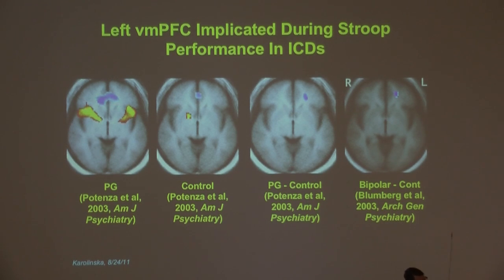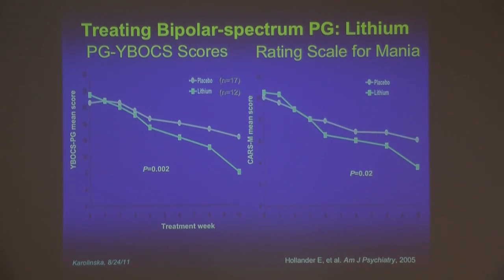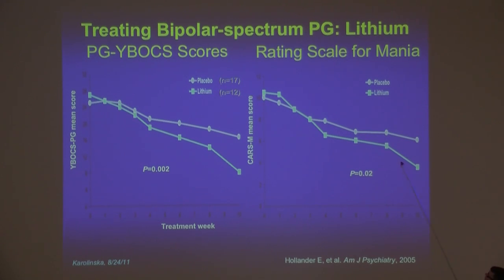Hilary Blumberg at our institution performed a similar study investigating individuals with bipolar disorder and identified a largely similar brain region as distinguishing most the individuals with bipolar disorder from controls, suggesting similar neural correlates between the disorders. Some of this may translate to treatment: work from Eric Hollander's group in individuals with pathological gambling and co-occurring bipolar spectrum disorder — largely bipolar II — found that active lithium was superior to placebo in a randomized clinical trial, statistically significantly different in both a reduction of problem gambling severity and a reduction of mania measures.